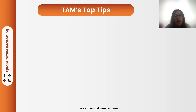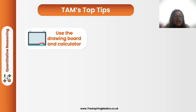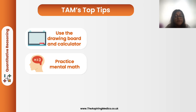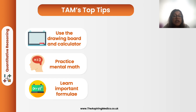Before we end, here are our top tips for the quantitative reasoning section. First, use the drawing board and calculator — note down previous answers and calculations as they may be useful for later questions in the same set. Second, practice your mental math; for smaller calculations you may actually save time compared to using the basic UCAT calculator. Third, learn important formulae such as acceleration, speed, distance-time, as the UCAT doesn't always provide them.